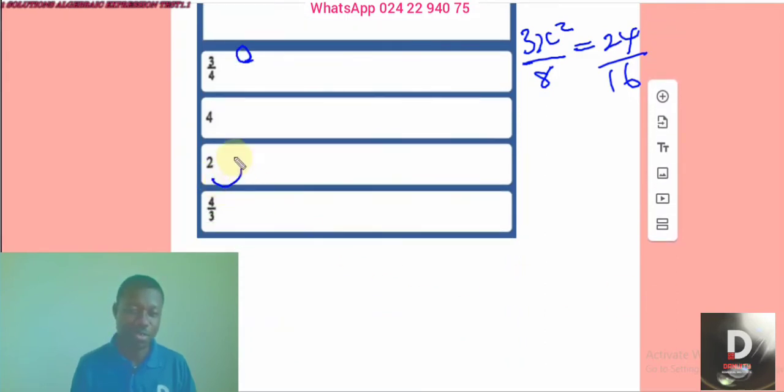The answer is 2. It's a little bit for you to choose. On that note, that's the end of test 1.1 solution on proportion.